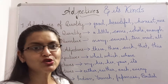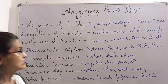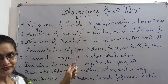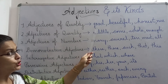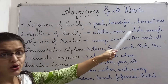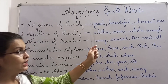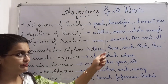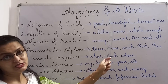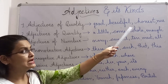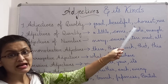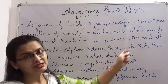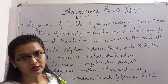There are eight kinds of adjectives. The first kind: adjectives of quality. Examples: good, beautiful, honest, nice. A good boy — describing the quality of the boy. A beautiful girl — describing the quality of the girl. An honest man — describing the quality of the man. A nice book — describing the quality of the book.